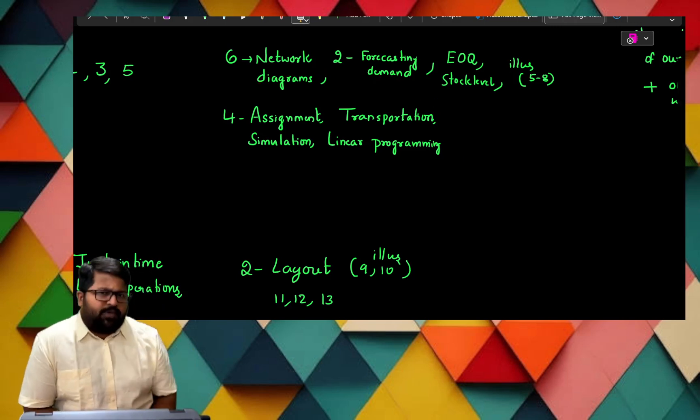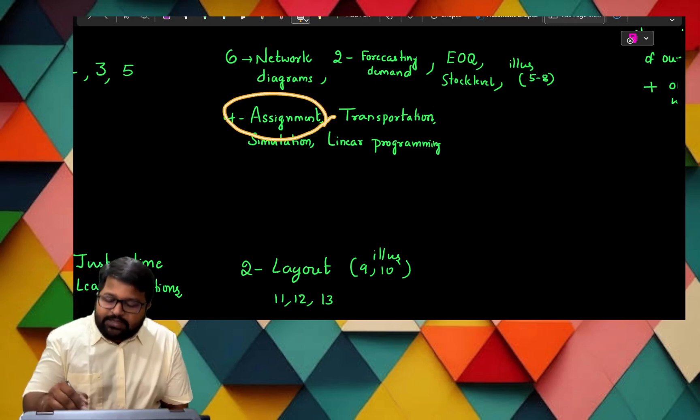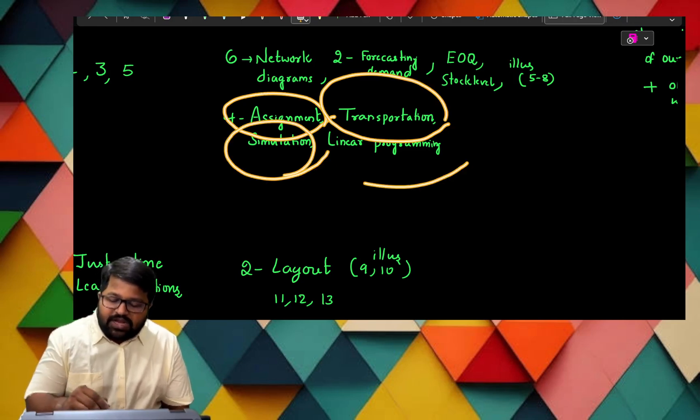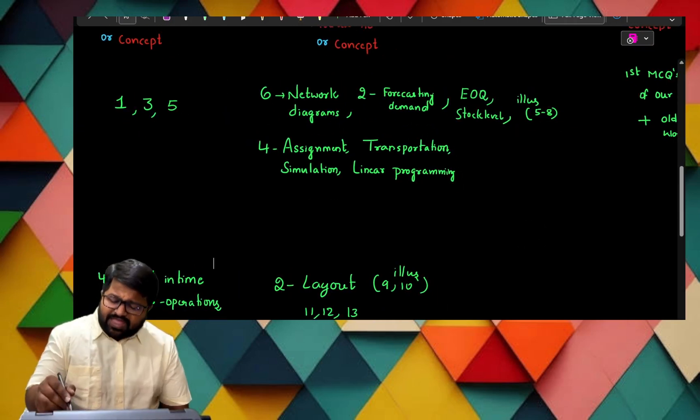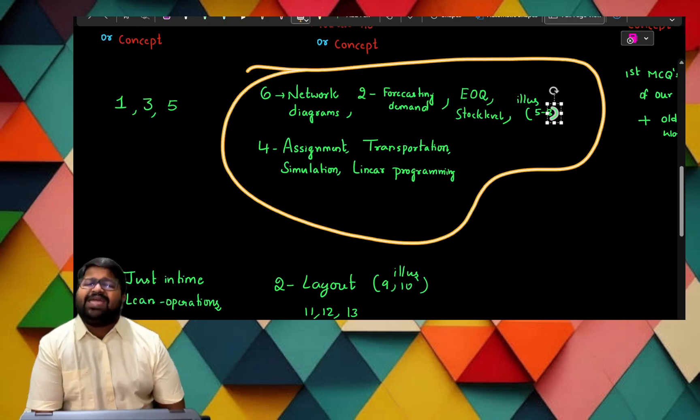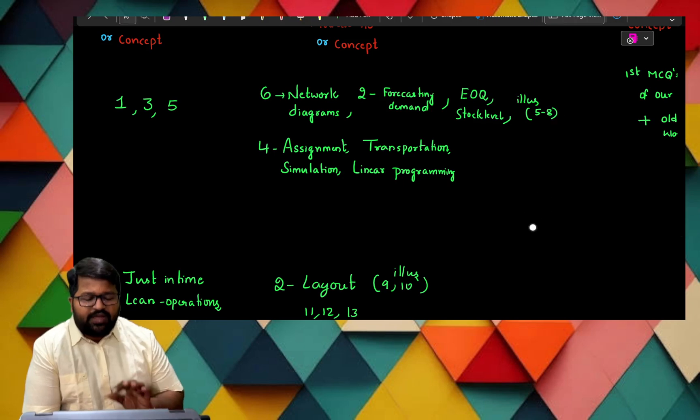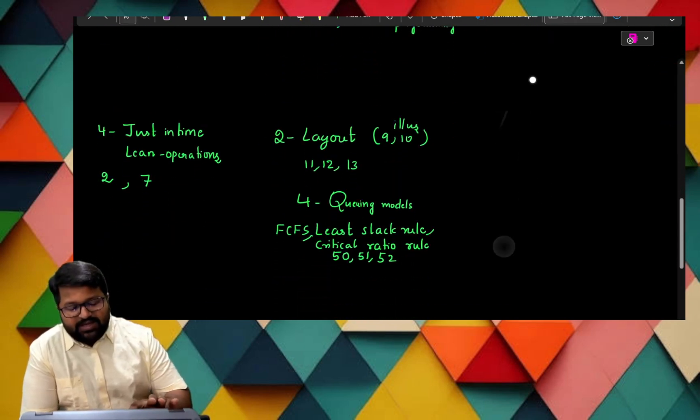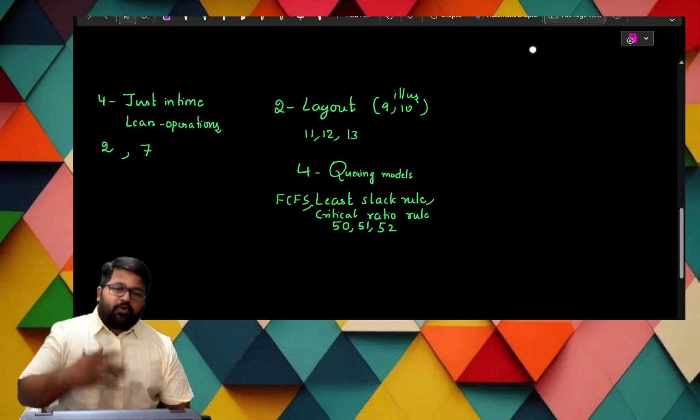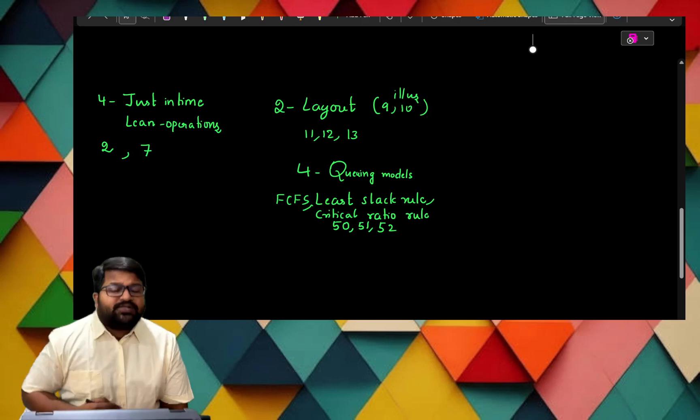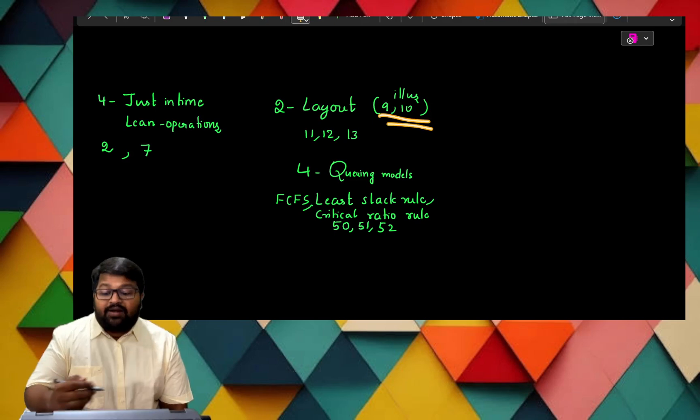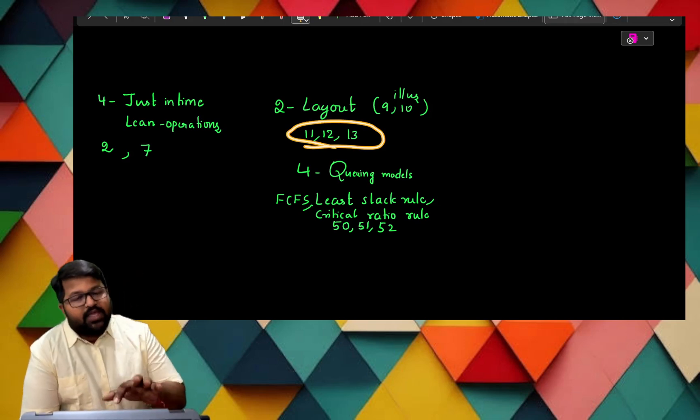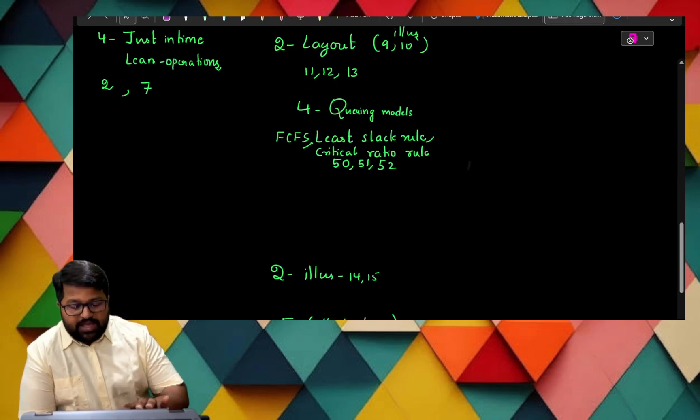The next module will be fourth. In the fourth we are having four most important topics: assignment, transportation, simulation, and linear programming. These things, as per my analysis, they fall into A category. So what is B category in the case of practical portion?